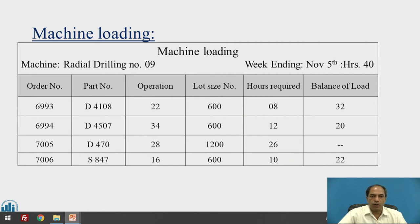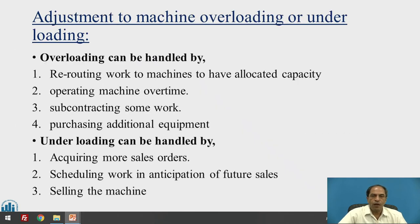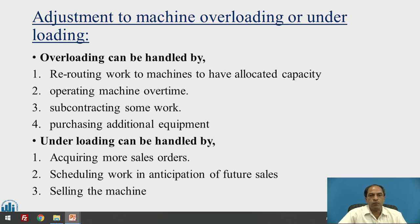There can be situations where underloading and overloading occur. Underloading means there are not enough jobs to process on the machine. Overloading occurs when the number of jobs is much greater than the machine capacity — the machine is already full.